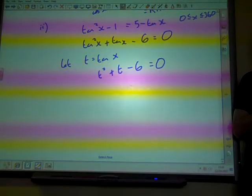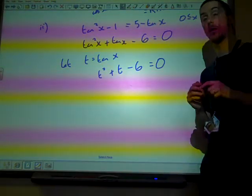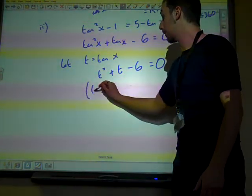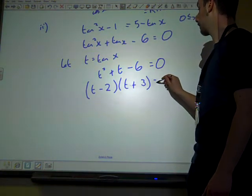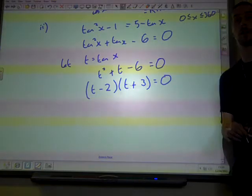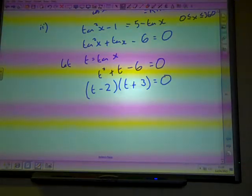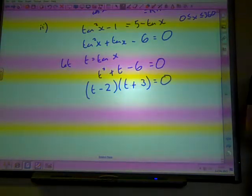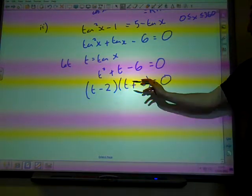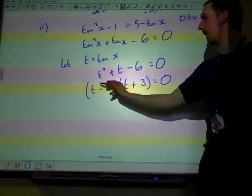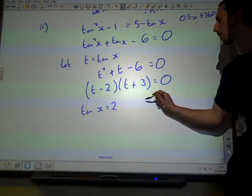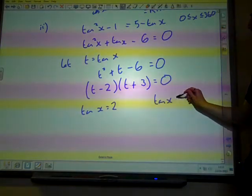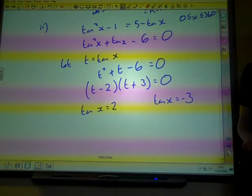Does that factorize? Yeah. t minus 2, t plus 3. We're good. Which gives us two values of t from that. Either t equals 2, well t was tan x, we're going to go straight to writing that. Tan x equals 2, or tan x is minus 3.